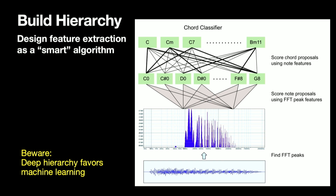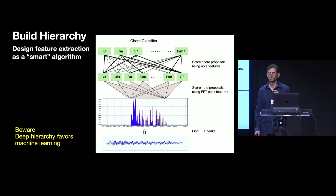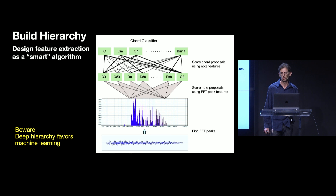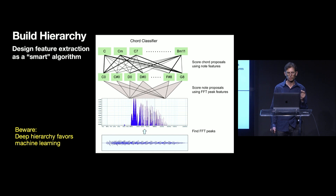For more complex problems, we need even more layers, and this is where neural networks really shine. Neural networks learn many layers simultaneously. It's very difficult for a human engineer or team of engineers to design many layers at once and converge on a good solution. I believe that neural networks are so powerful and solve previously unsolvable problems specifically because they learn many layers at once.